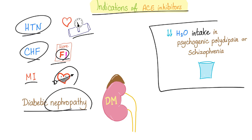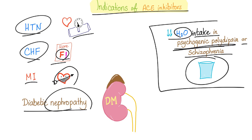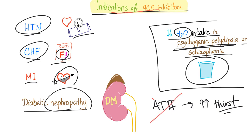ACE inhibitors can also be used to decrease water intake in patients suffering from psychogenic polydipsia or schizophrenia. Why? Because angiotensin-2 used to increase thirst sensation, so when you use an ACE inhibitor, there is no angiotensin-2, and you decrease the thirst sensation. Brilliant, isn't it?